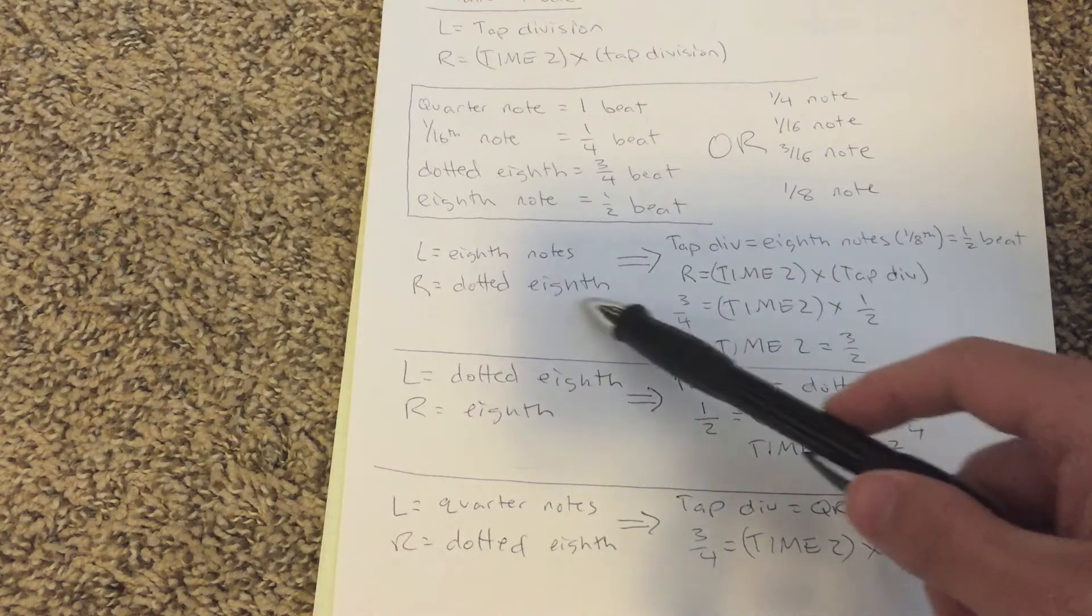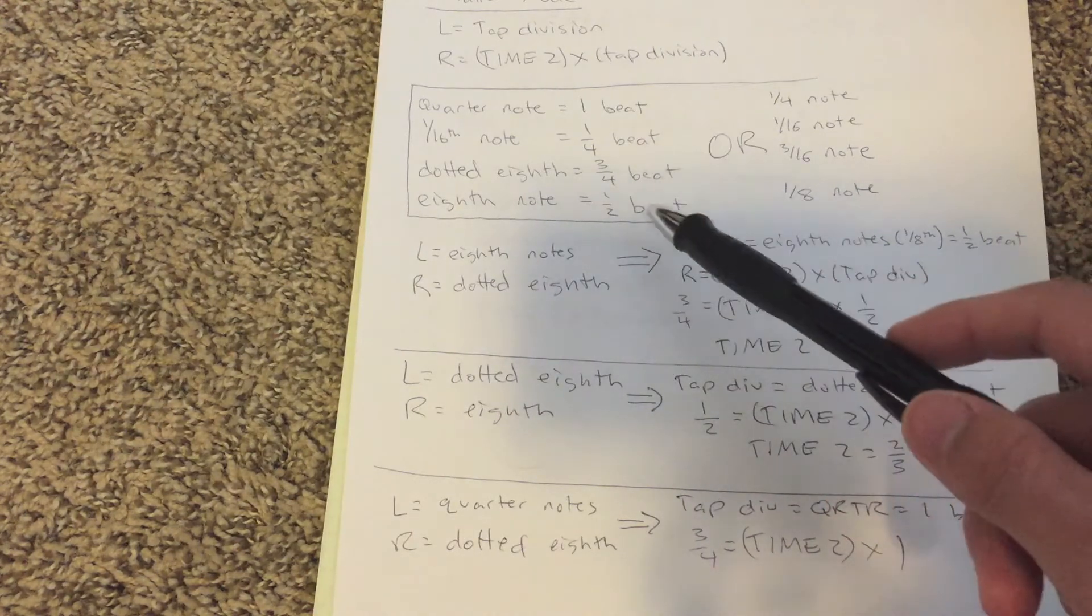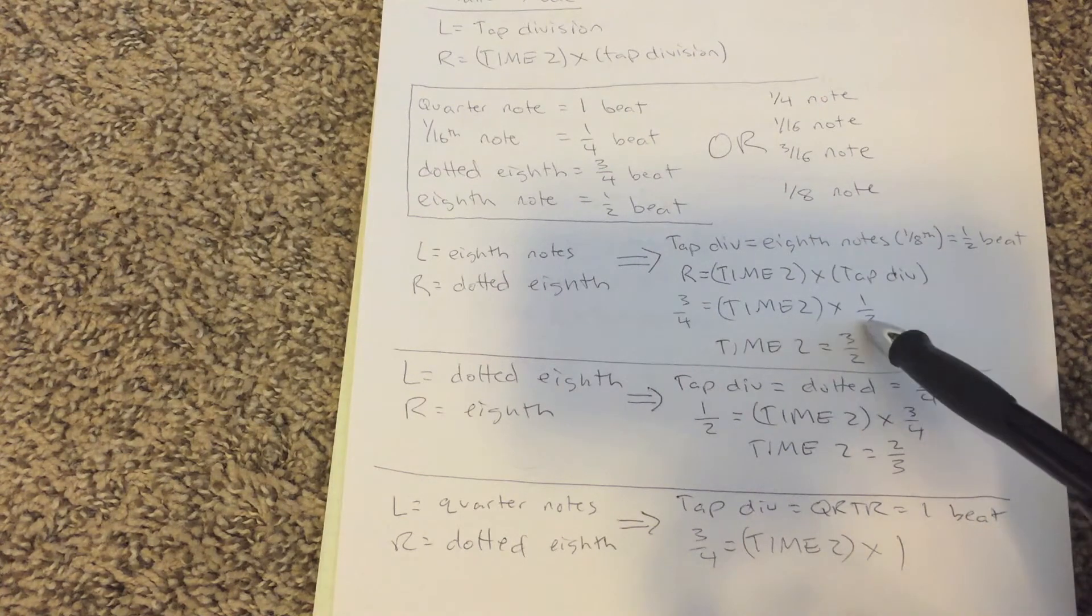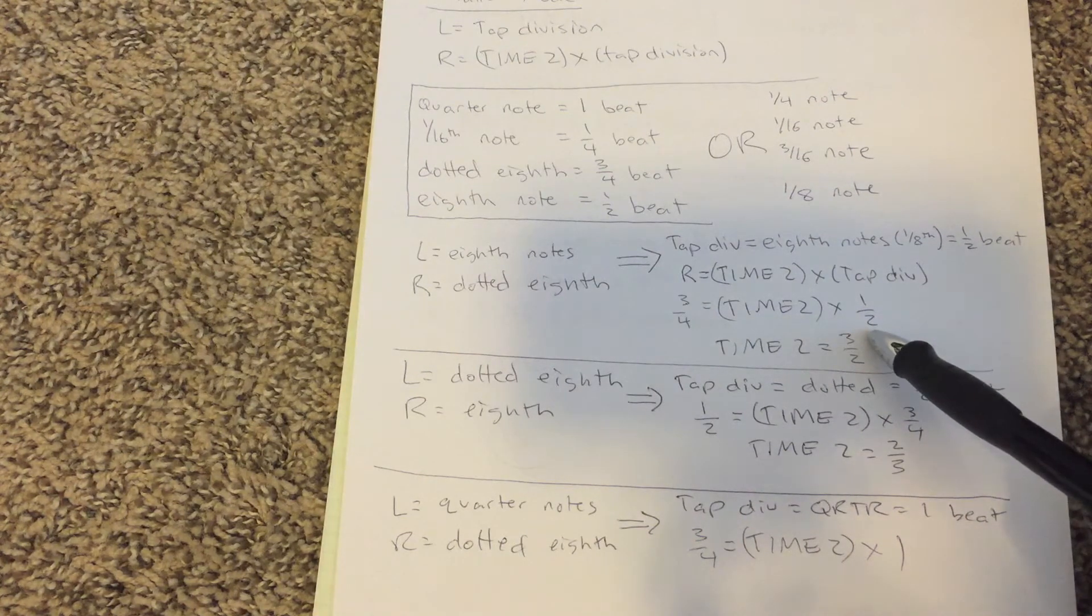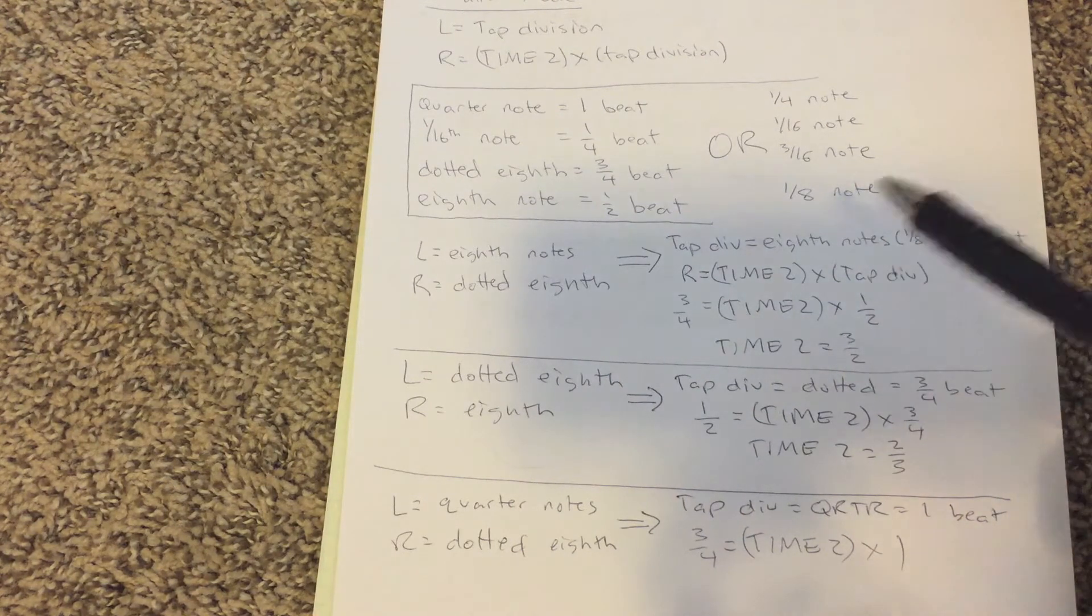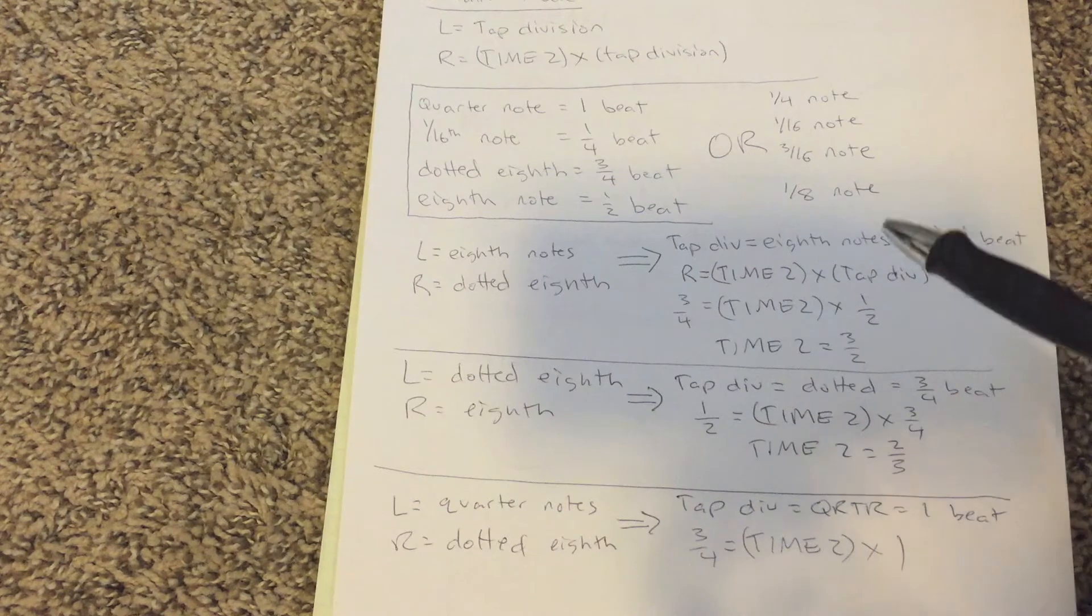Using this formula, I know my dotted eighth note is three quarters of a beat. I don't know what I want my ratio to be yet. And I know that my tap division is half a beat. So if I have this equation, I solve for time two, I get that the ratio is three halves. And that's exactly what I just showed you guys.